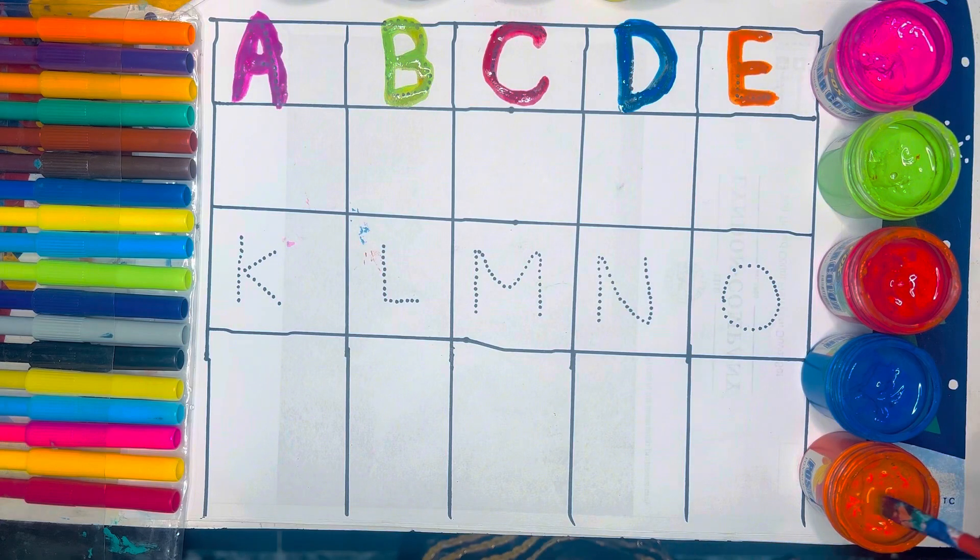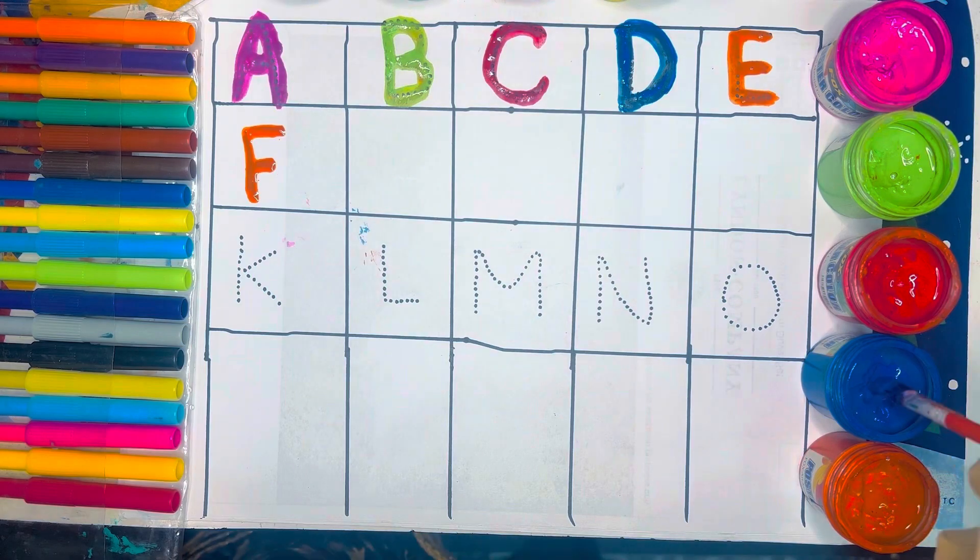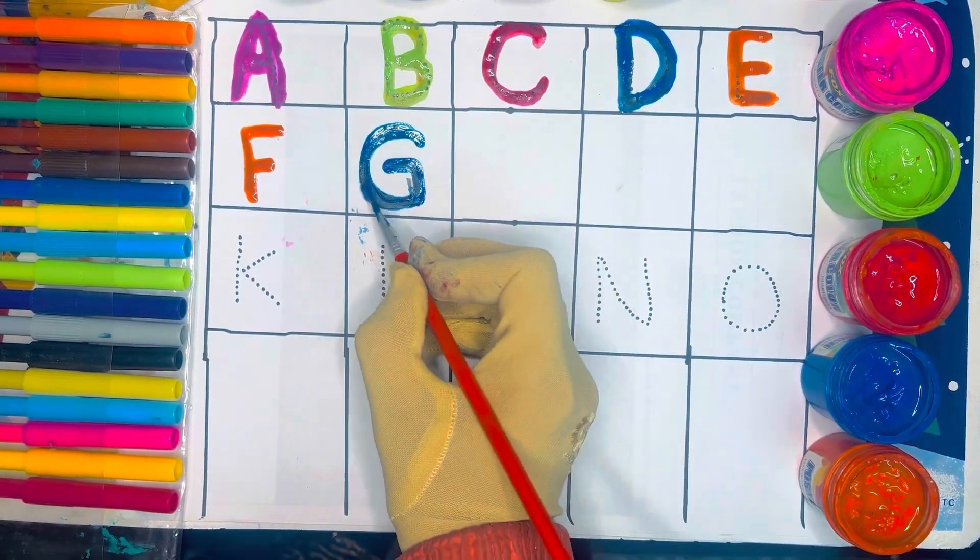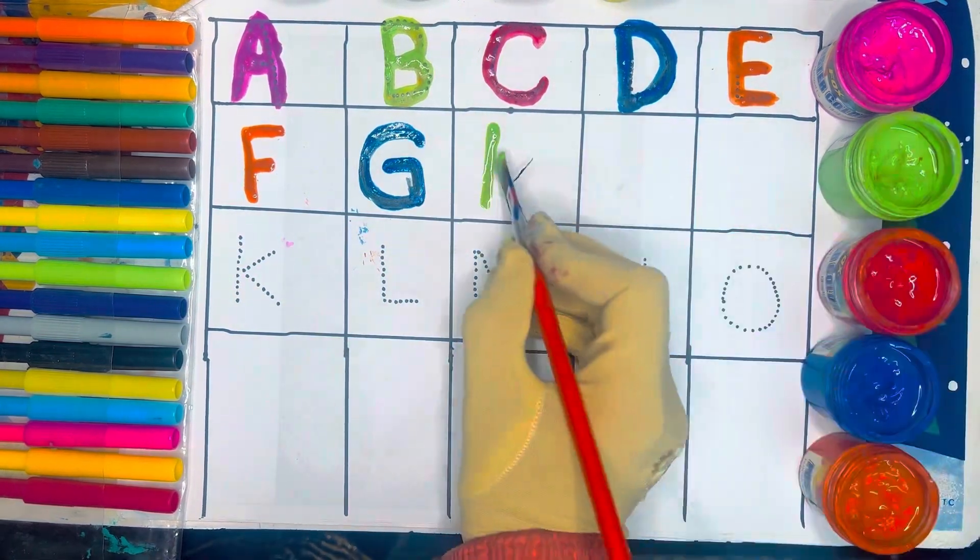Again, orange color. F, F for fish, blue color. G, G for goat, green color.